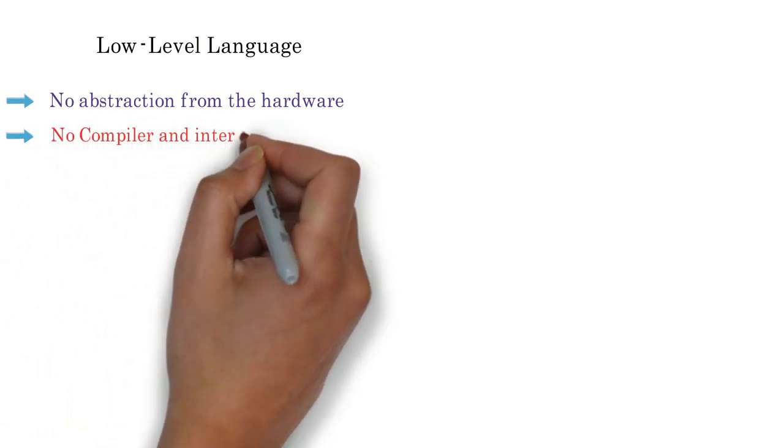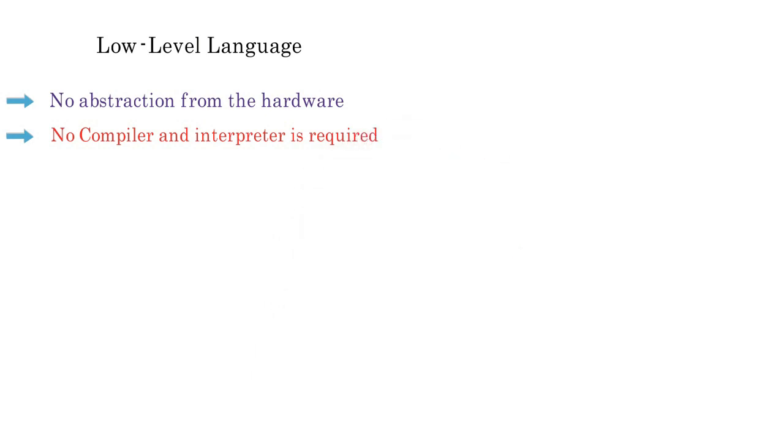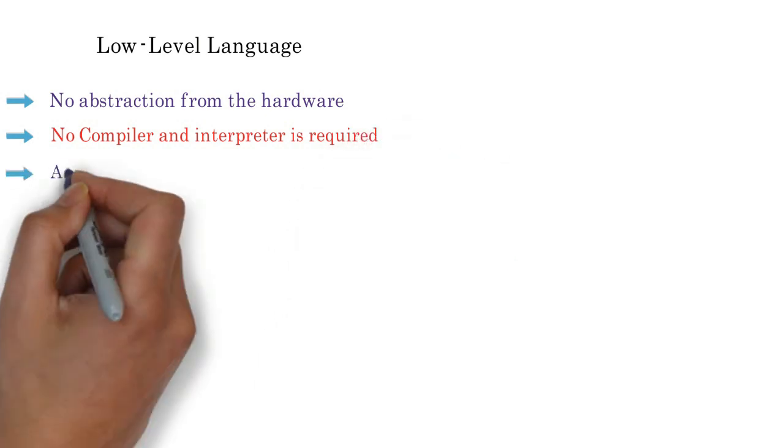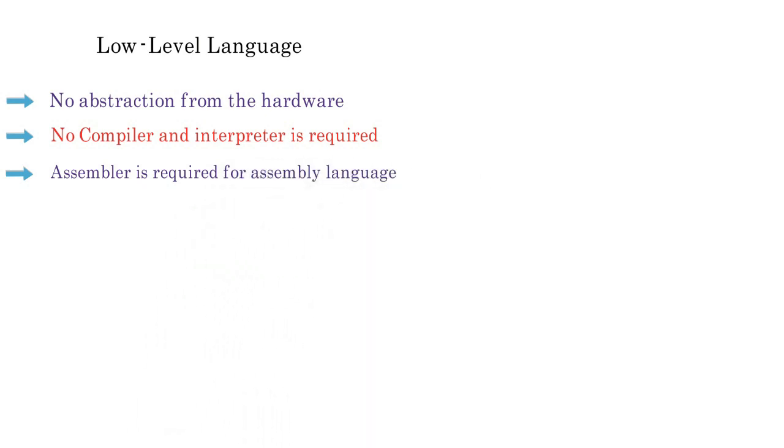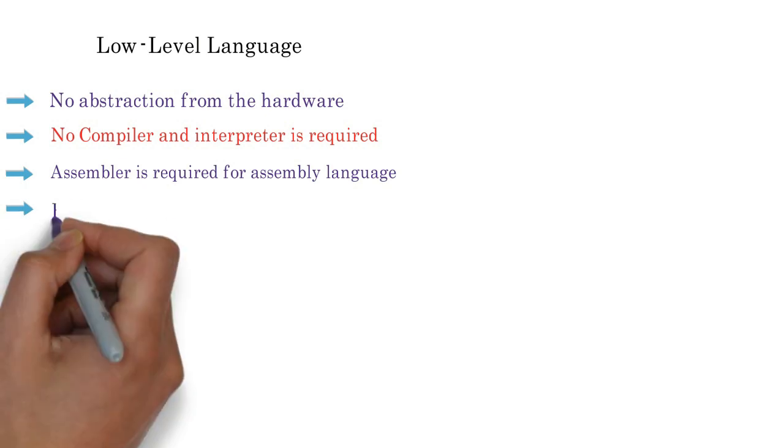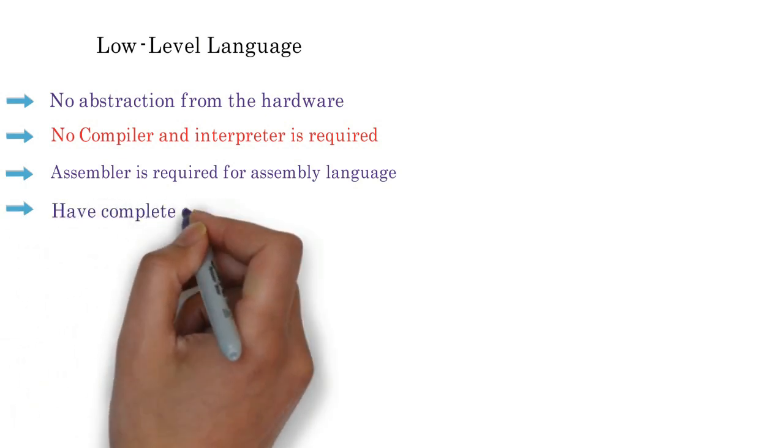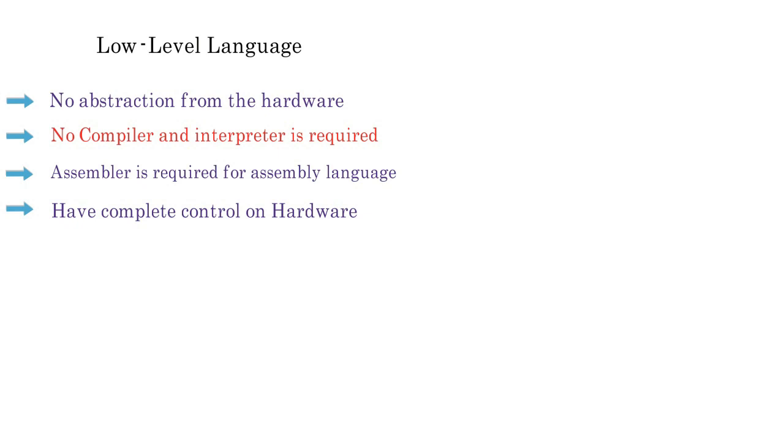Without any compiler or interpreter, they only need an assembler which translates low-level language to machine code. Low-level programming languages are dependent on the computer architecture. Programmers have complete control over the hardware, like operations on registers and memory allocation.